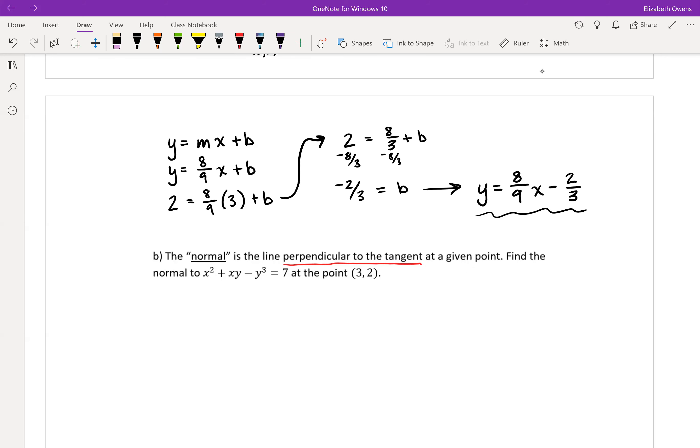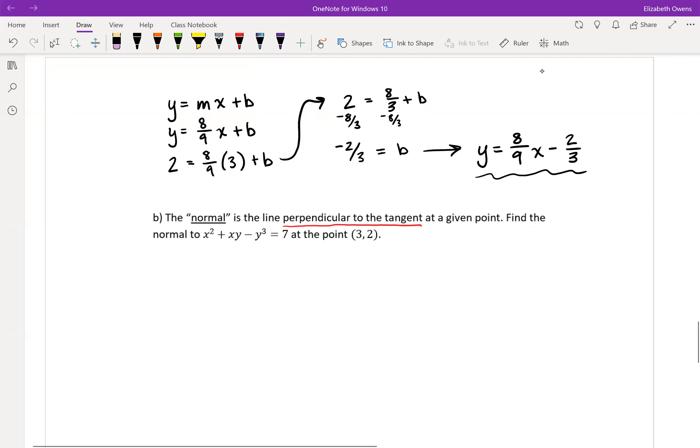So we're just going to work off of that idea of a perpendicular slope here since we already found the slope of the tangent line. Our tangent slope was 8/9.